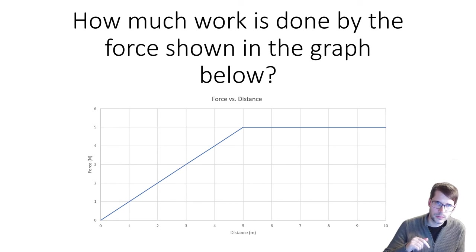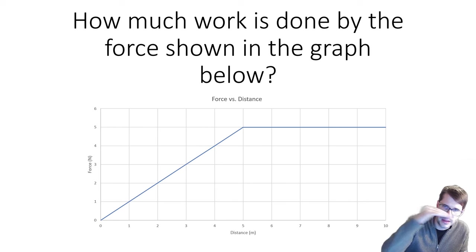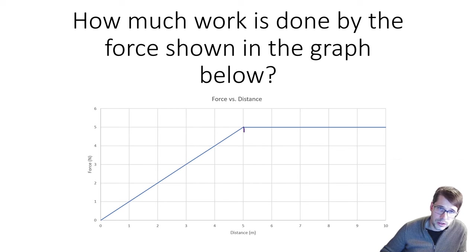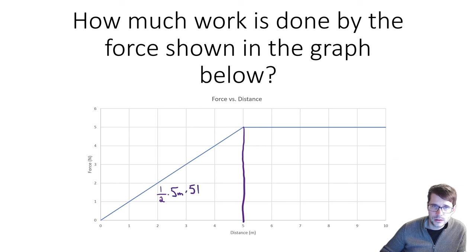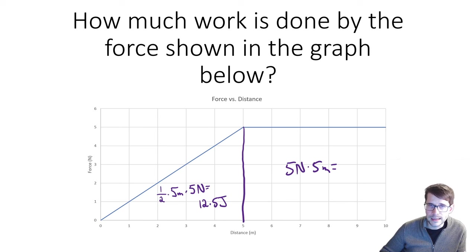One last example, slightly more complicated: a graph with a diagonally increasing section and then a constant force section. We break this into two shapes — a triangle on the left and a rectangle on the right. For the triangle: one-half times 5 times 5 equals 12.5 joules of work. For the rectangle: 5 times 5 equals 25 joules of work. Adding them together: 25 plus 12.5 gives 37.5 joules total.